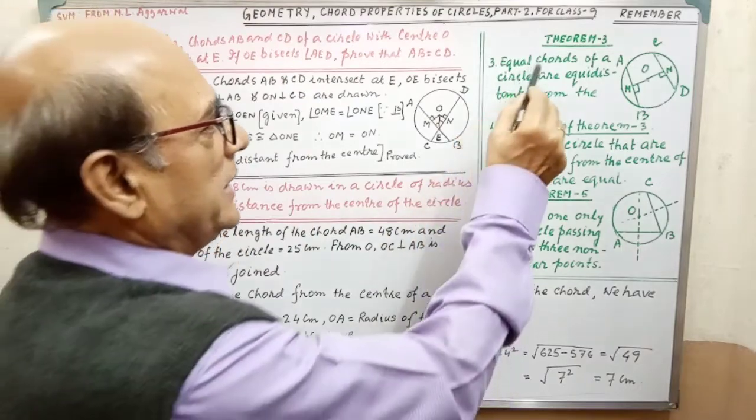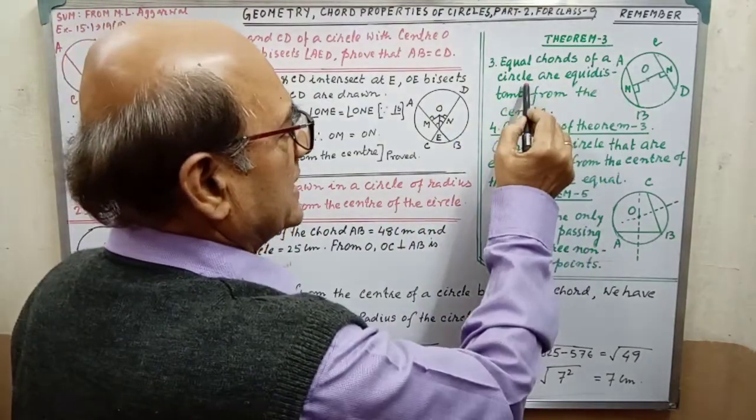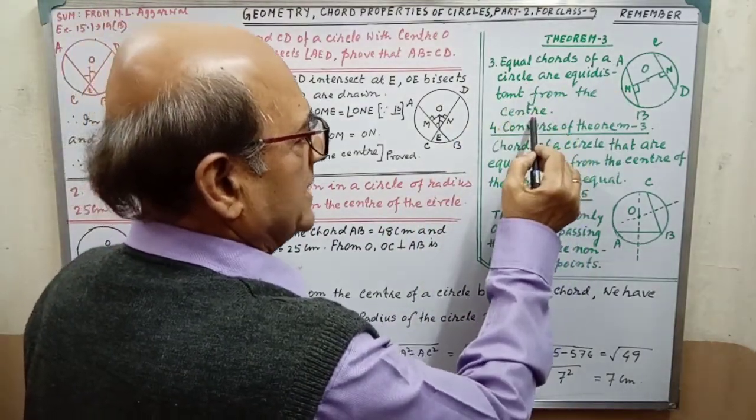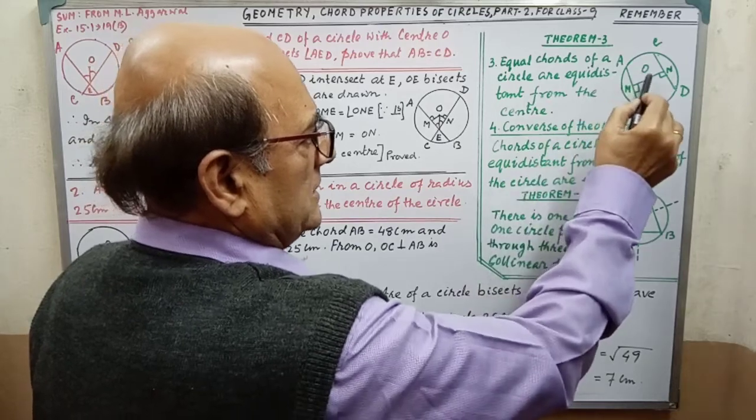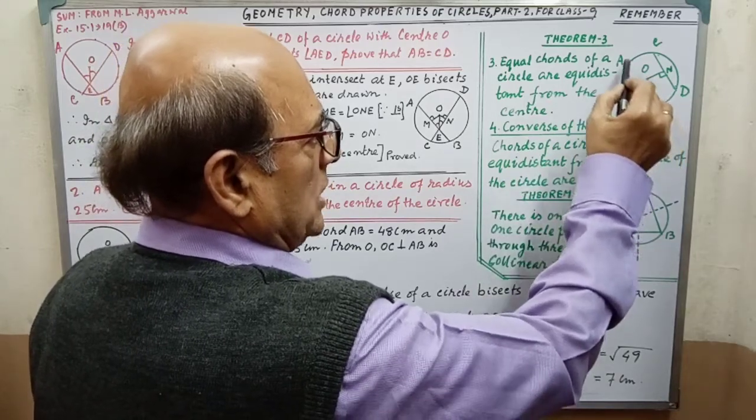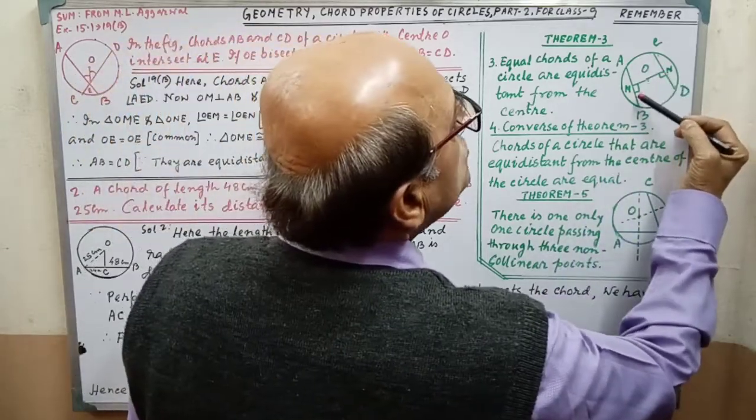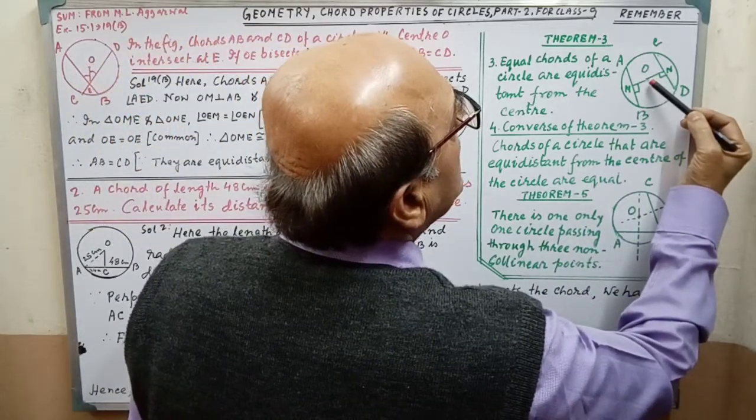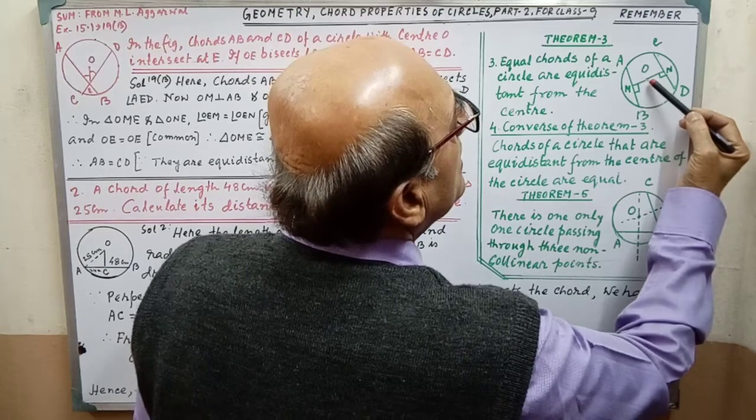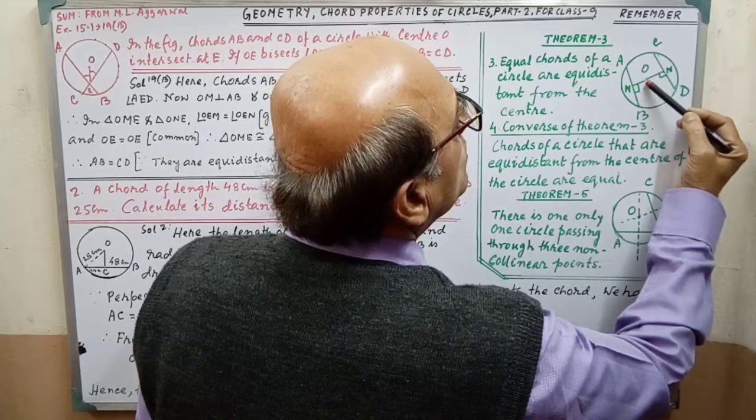Please see, both equal chords of a circle are equidistant from the center. These two chords are equal chords and we have to prove these two chords are equal distance from center. That means OM equal to ON.